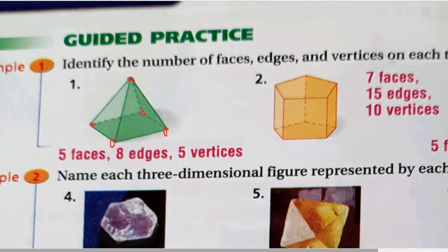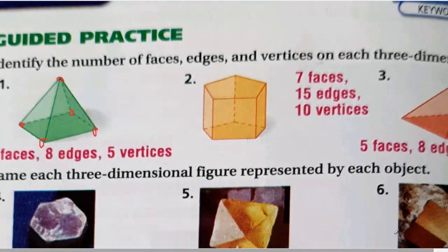In question two, we count how many faces, edges, and vertices. The base: we have base one on the bottom and base two on top, so that's two. Then we have five side faces — one, two, three, four, five. Five plus two is seven, so we have seven faces.